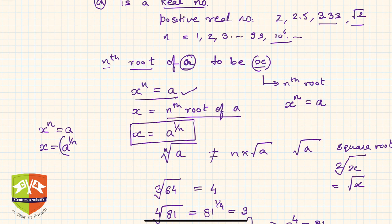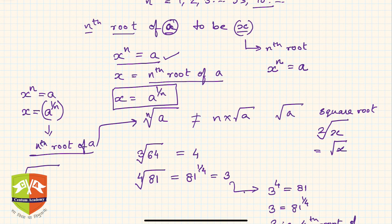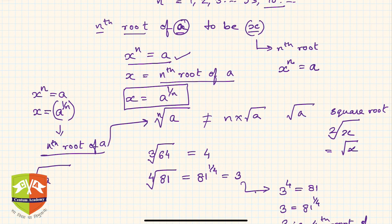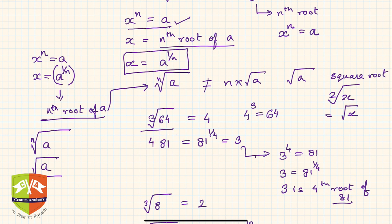This value is called the nth root of a, and it is also expressed using a radical sign with a written inside. For a square root, you don't need to write n — you simply write the root of a. As an example, the third root of 64 is 4, because if you raise 4 to the power 3 you get 64. Hence, the third root of 64 is 4.